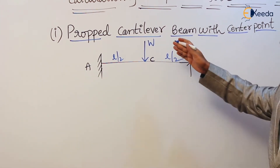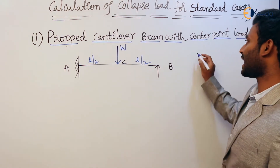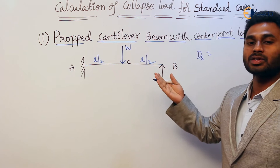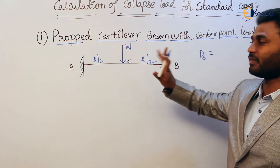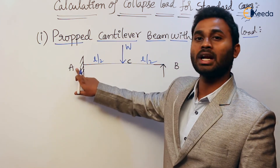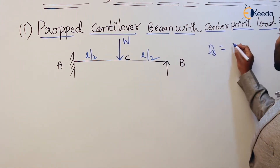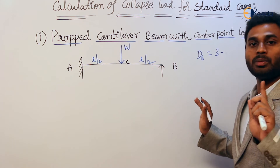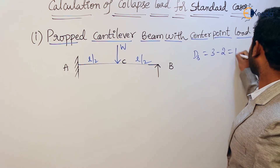The first step in the calculation of collapse load is the calculation of DS — the degree of static indeterminacy — which is the number of unknown reactions in excess of equations of equilibrium. Since loading is vertical, we consider only vertical reactions: one at A, one at B, and a moment at A, giving 3 total reactions. With only two equilibrium equations to consider (sigma Y = 0 and sigma M = 0, since there is no horizontal load), DS equals 3 minus 2, which is 1.